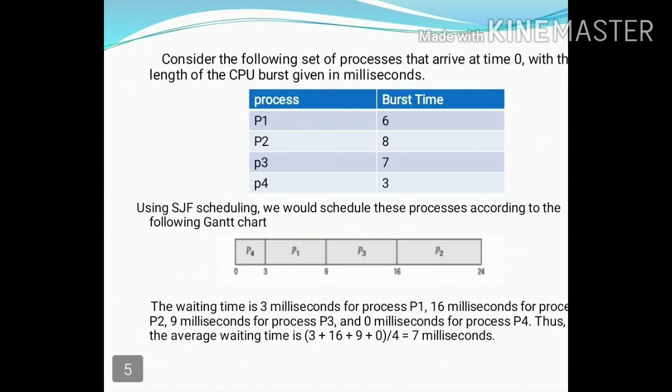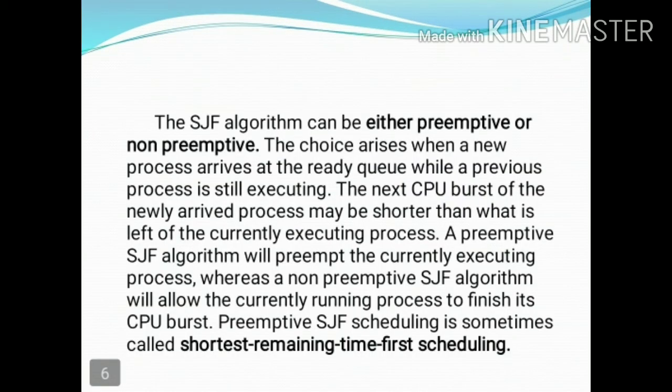With the Shortest Job First scheduling mechanism, the average waiting time is lower than FCFS. The SJF algorithm can be either preemptive or non-preemptive. In non-preemptive mode, once the current executing process is complete, then the CPU is allocated to the shortest remaining job.